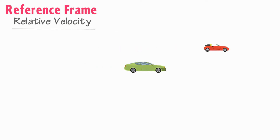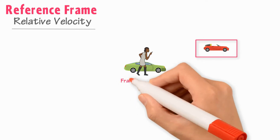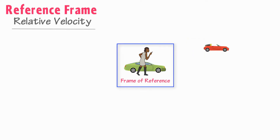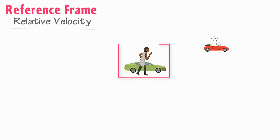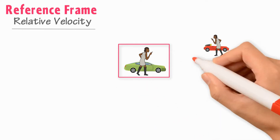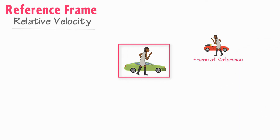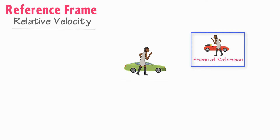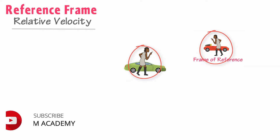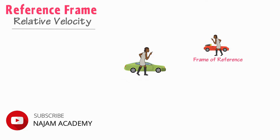For example, if two cars are moving together and you observe the motion of one car from the other car, then here the frame of reference is that other car, because you are observing this car with respect to that car. Similarly, if you observe the motion of a car with respect to another car, then that car becomes the frame of reference. Frame of reference is the place or point from where you observe the motion of a body.